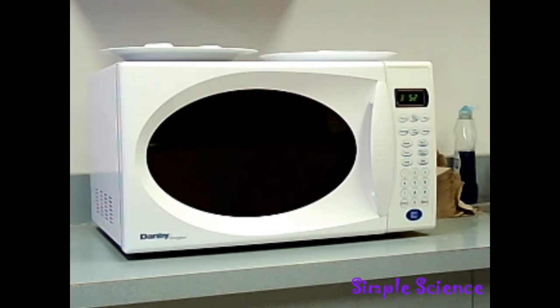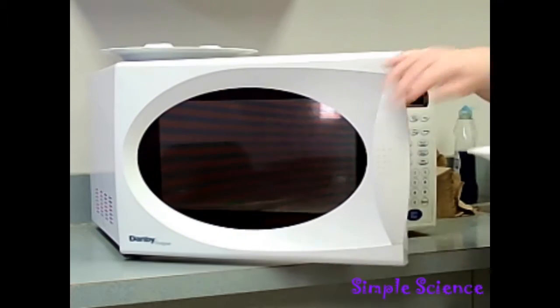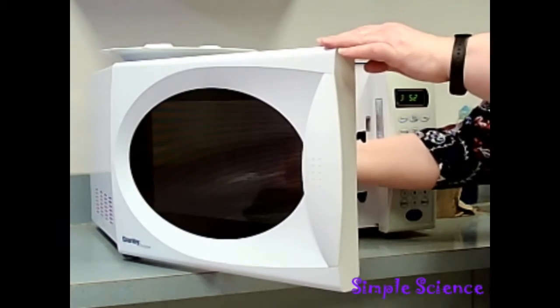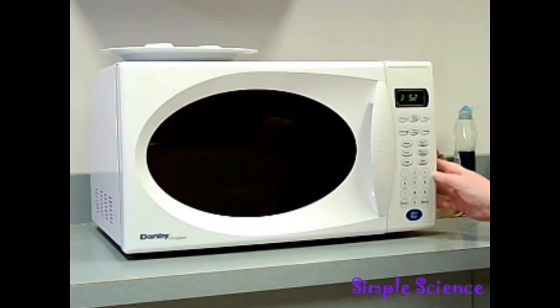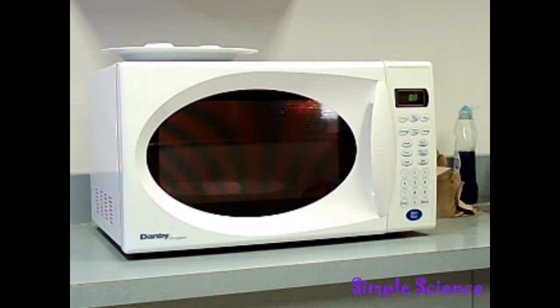So here we are at the microwave in the staff room and we are going to start with the uncut bar of soap. We will stick it in the microwave and set the timer for 90 seconds. Now you want to keep an eye on things after you've started it just in case your microwave is stronger than the one we have here. And you may need more time if your microwave is weaker than the microwave we have here.